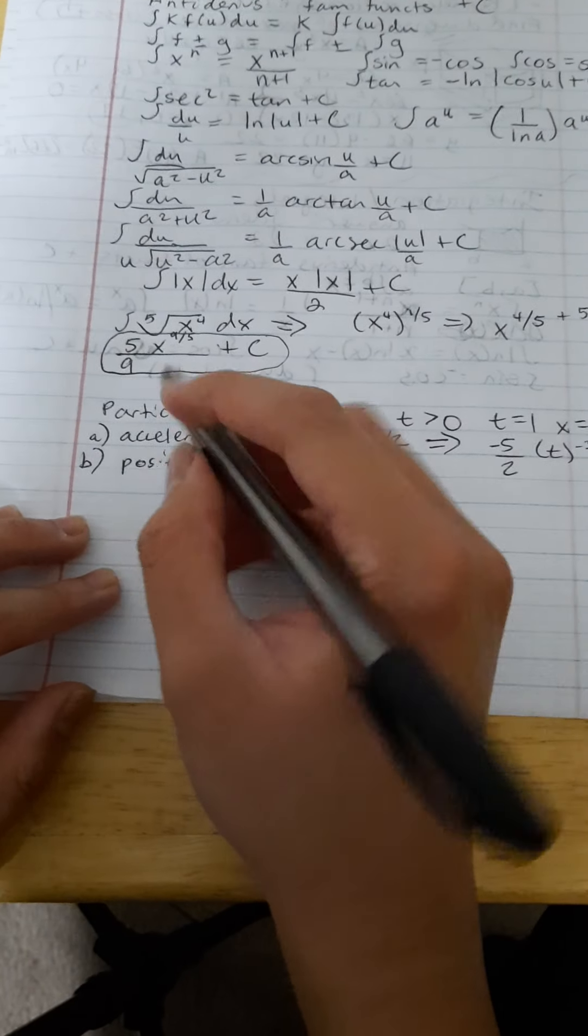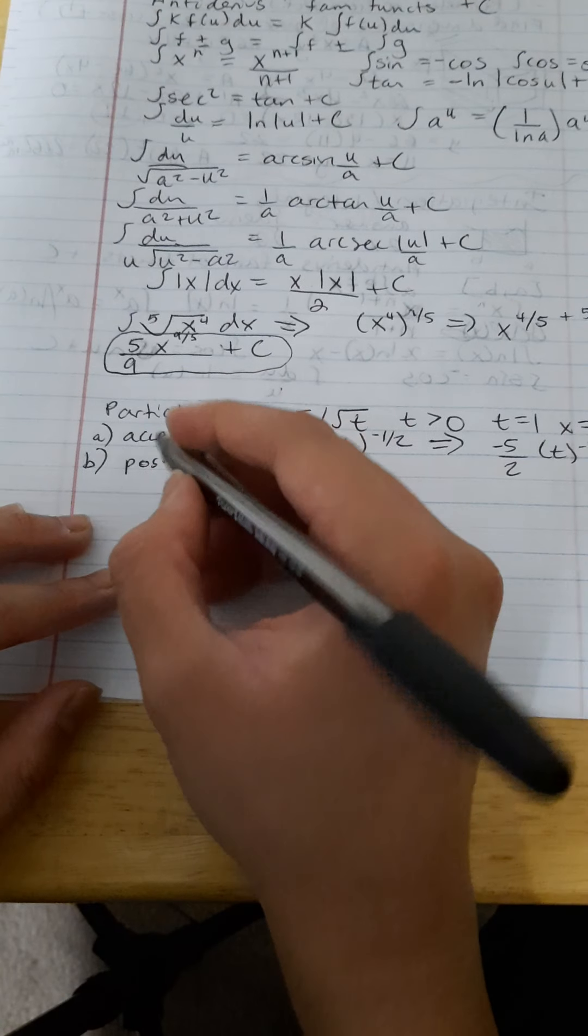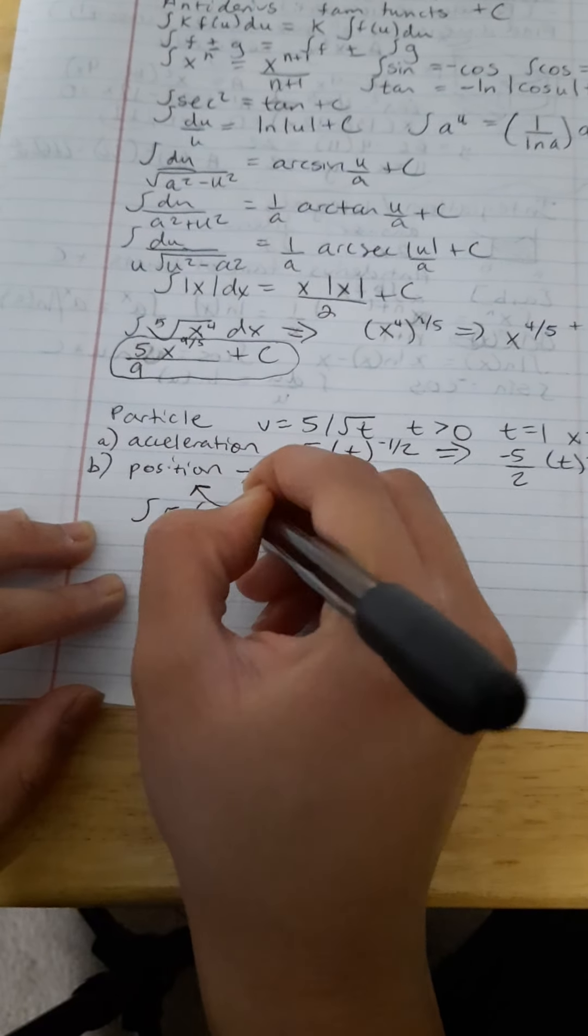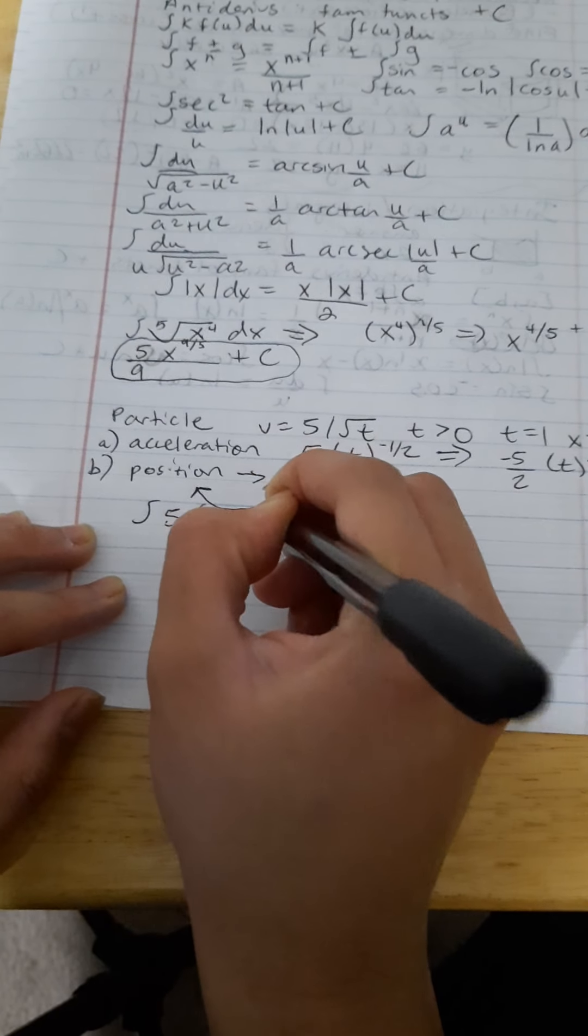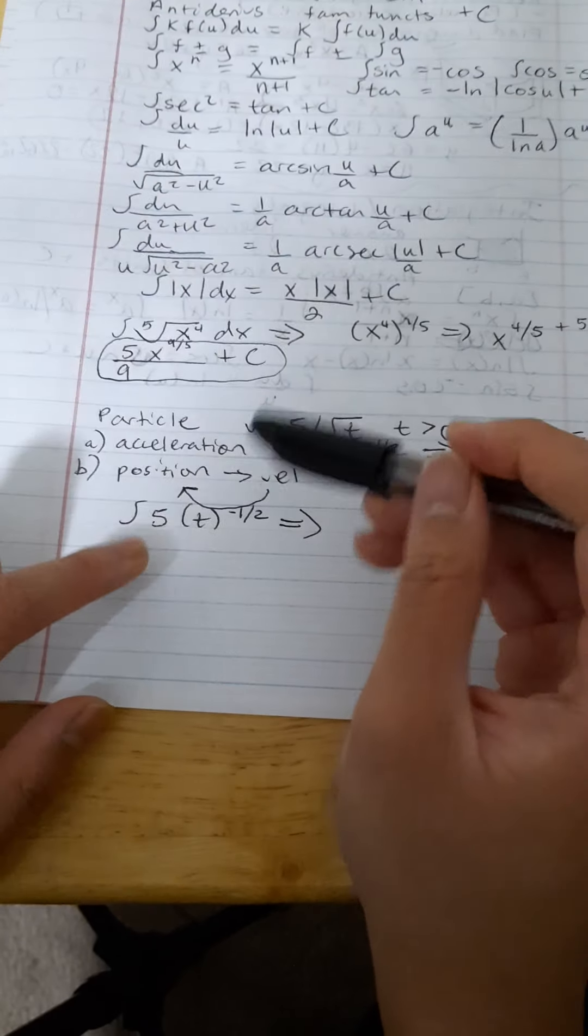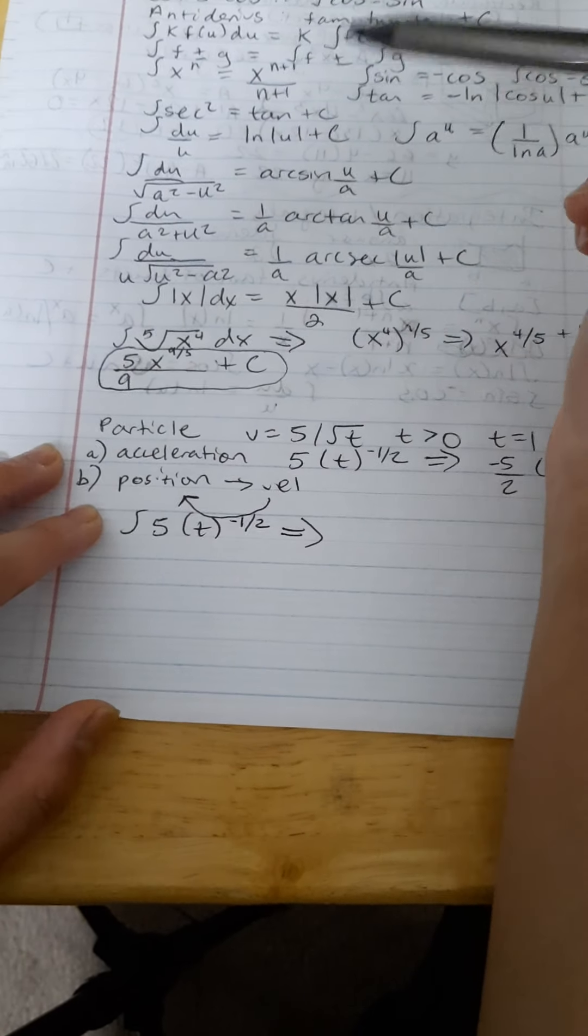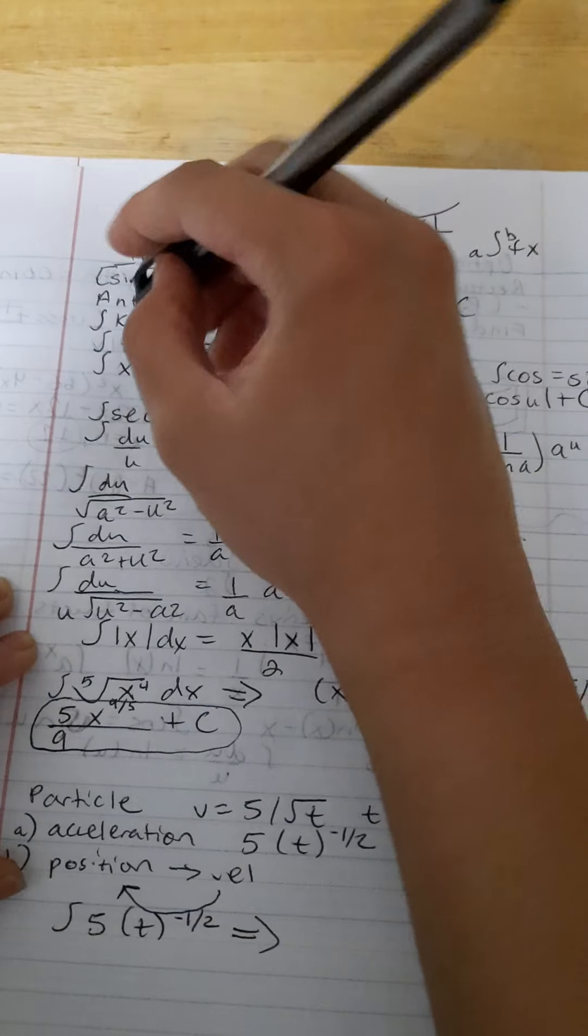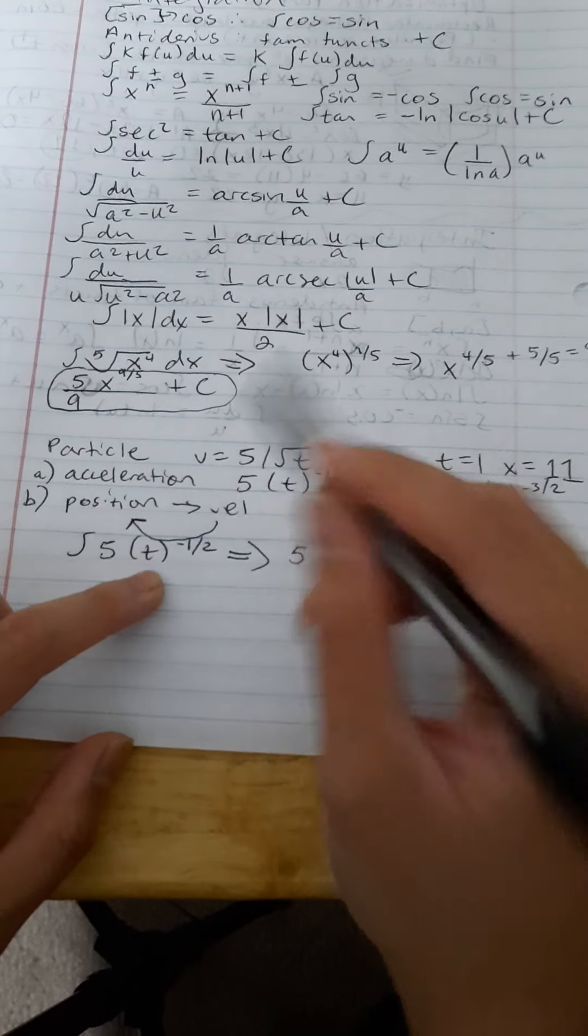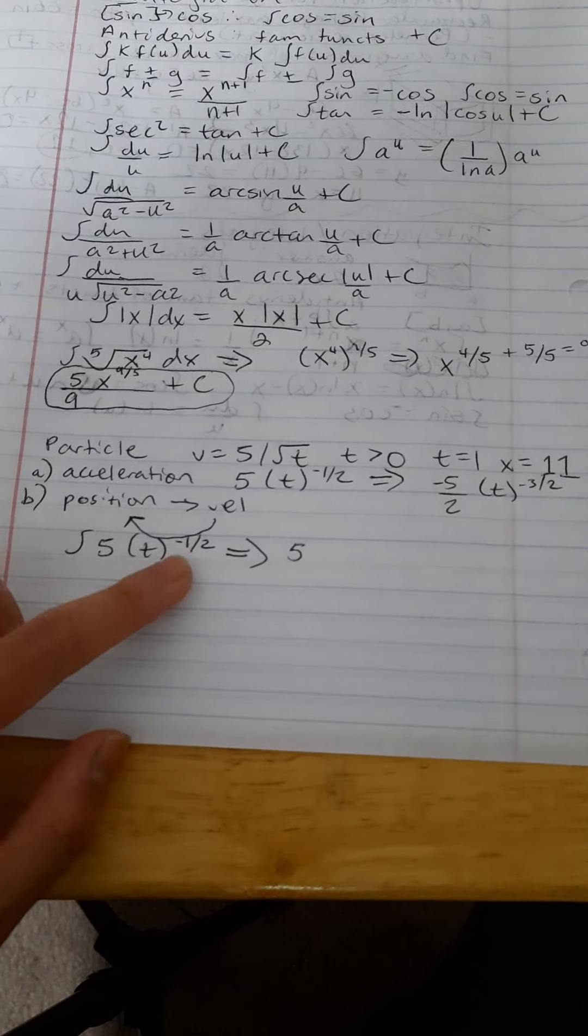So, we're going to use integration on this, 5 over the square root of t. So, when we do that, we're going to take the integral of 5t to the negative 1/2. And when we do this rule for both the constant, which is that k times f(u) du thing, we'll move the 5 out, then we're just left with t to the negative 1/2.